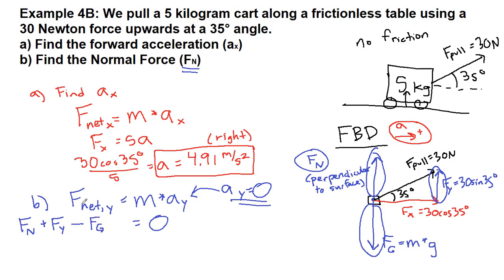We could have written that the force of gravity was positive and the other two arrows were negative. It would be equivalent because this is equal to zero. And now we can plug in the numbers that we have. So the normal force, which is what we are solving for, plus 30 sine 35 degrees minus, so mg is 5 times 9.8, all of that equals zero.